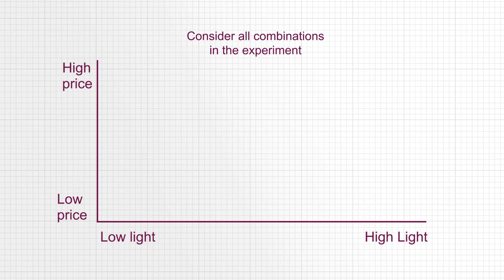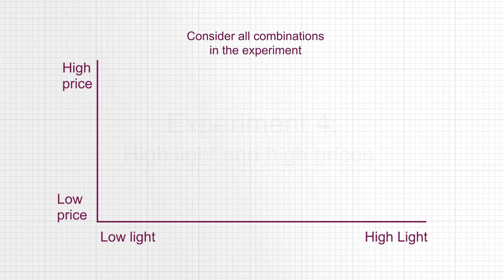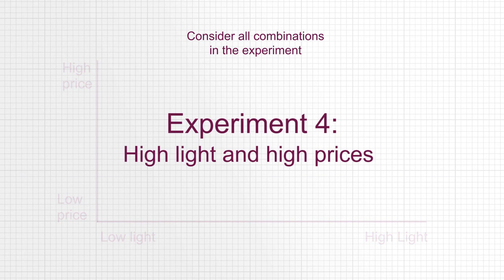We have a low price here at the bottom and then a high price at the top. So there are three experiments here so far. There is actually a fourth experiment we should also run. It is the combination of high amount of light with high prices. Let's assume you have four days and you could run these four experiments, one per day.